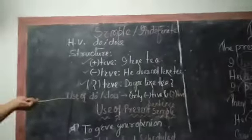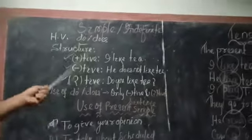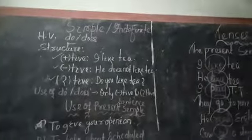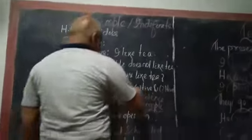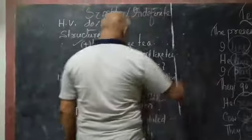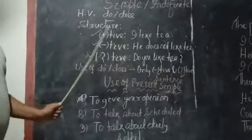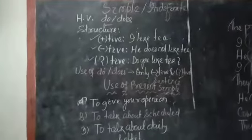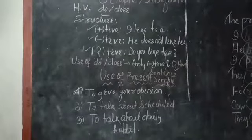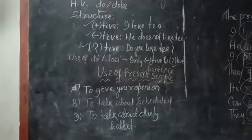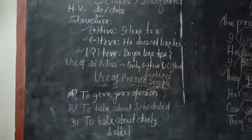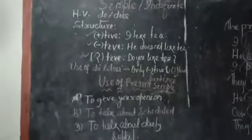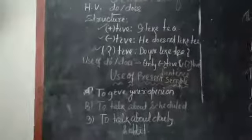Important things you remember. Use of do and does. In present simple only. In negative and interrogative sentence, we use do and does. Present simple case, helping verb is do and does.